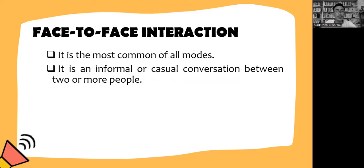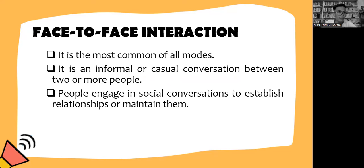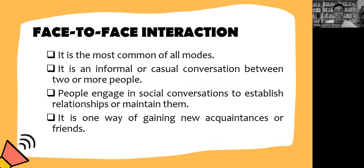Let's start with the first communication mode: face-to-face interaction. Face-to-face interaction is the most common of all modes. It is an informal or casual conversation between two or more people. People engage in social conversation to establish or maintain relationships, and it is one way of gaining new acquaintances or friends. Face-to-face interaction is defined as a mutual influence of individuals' direct physical presence with his or her body language. It is one of the basic elements of the social system, forming a significant part of individual socialization and through experience gained throughout one's lifetime.